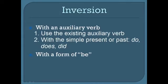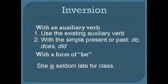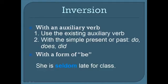The exception to this pattern would be a sentence with the form of 'be' as the main verb. For example: 'She is seldom late for class.' If we emphasize 'seldom' by placing it first, which forces inversion, we get: 'Seldom is she late for class.' No auxiliary verb is needed — we simply inverted 'is' and 'she.'